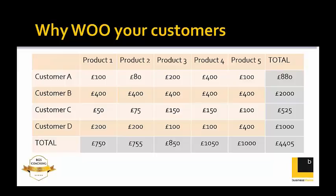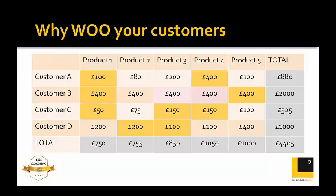Some of those customers will already be buying some of those products or services, and we colour those yellow. For example, Customers A and C are already buying Product 1 at £100, £400, and £50 per year respectively — marked yellow. That's already in the bank; we're not really moving forward with those in today's session, though there are things you could do with them using other ideas.